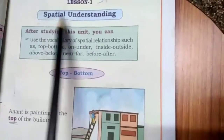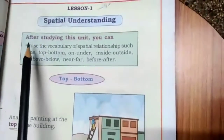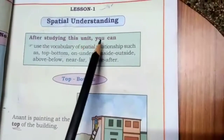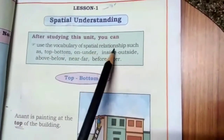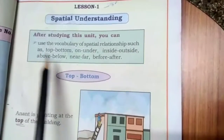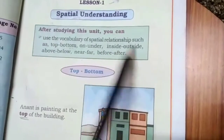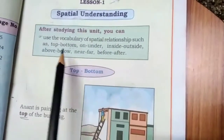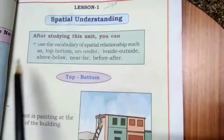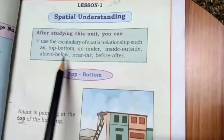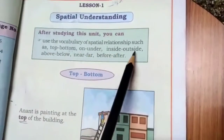Spatial means distance — we are just understanding the distance. So after studying this unit you can use the vocabulary of spatial relationships such as: top, bottom, on, under, inside, outside, above, below, near, far, before, after. These are just like opposite words.